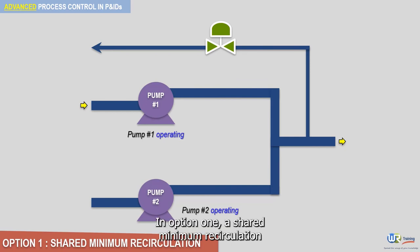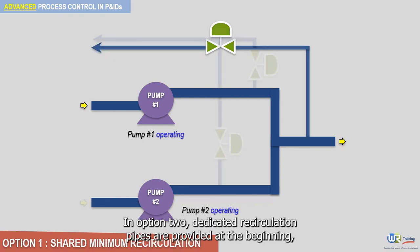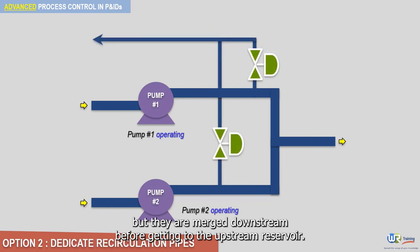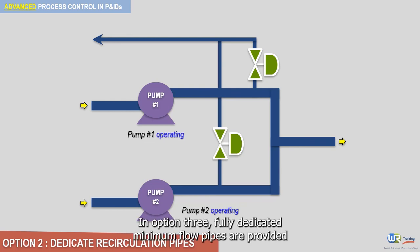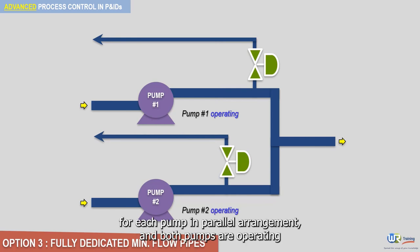We have three options for providing minimum flow lines for parallel operating pumps. In option 1, a shared minimum recirculation pipe is provided for two operating pumps. In option 2, dedicated recirculation pipes are provided at the beginning, but they are merged downstream before getting to the upstream reservoir. In option 3, fully dedicated minimum flow pipes are provided for each pump in the parallel arrangement, and both pumps are operating.